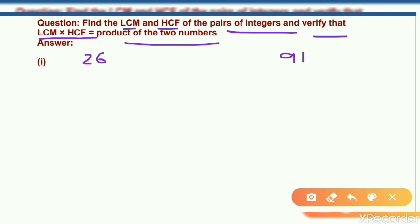So let's get back to the prime factorization method. What we get? We get 2 ones are 2, 2 threes are 6, 13 ones are 13.